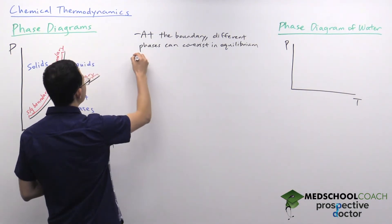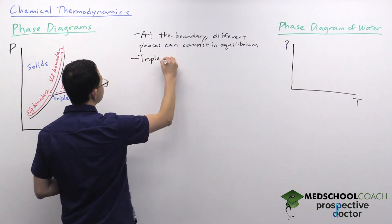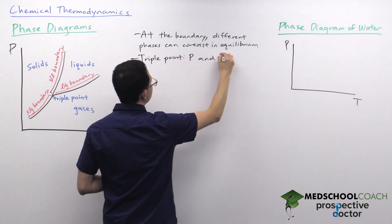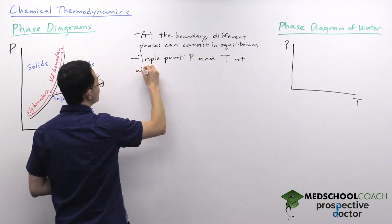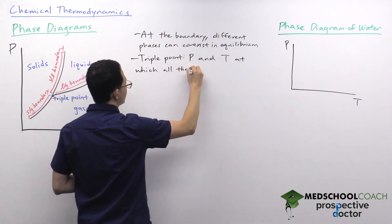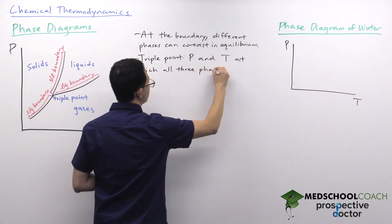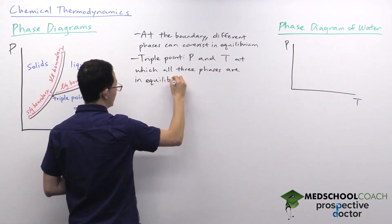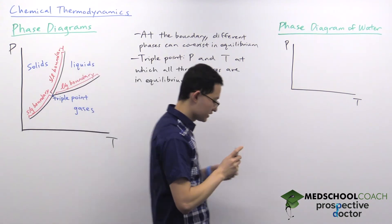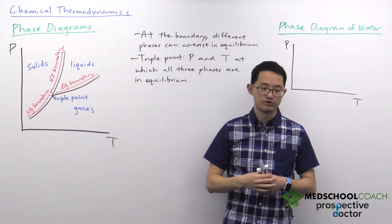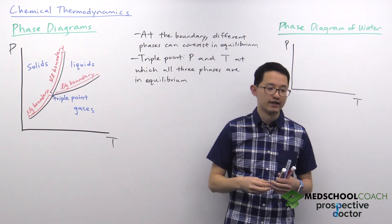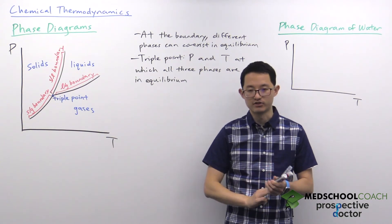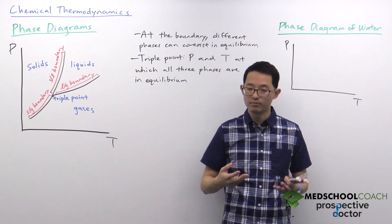The triple point is the pressure and temperature at which all three phases are in equilibrium. Here on Earth we are actually pretty close to the triple point of water, which is why on a winter day it's possible for there to be ice, liquid water, and water vapor — solid, liquid, and gas all present at the same time.